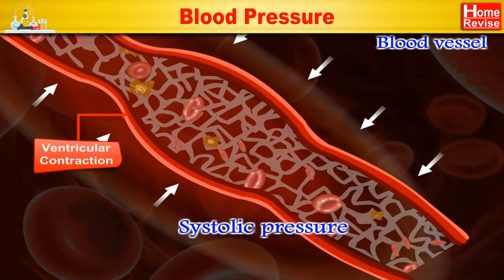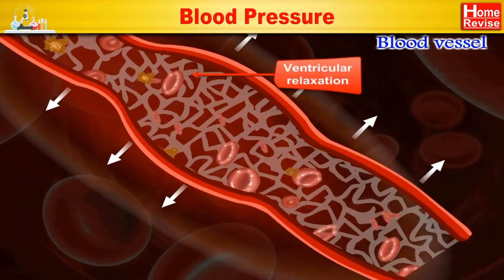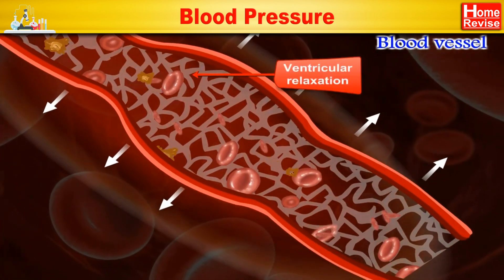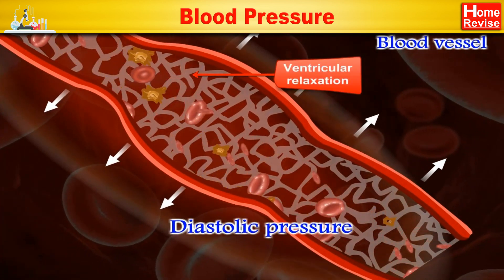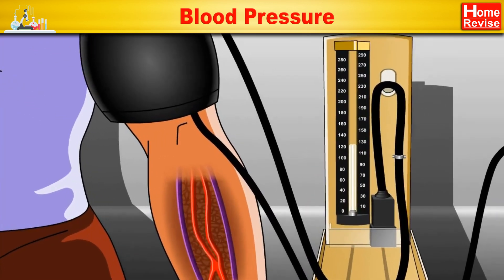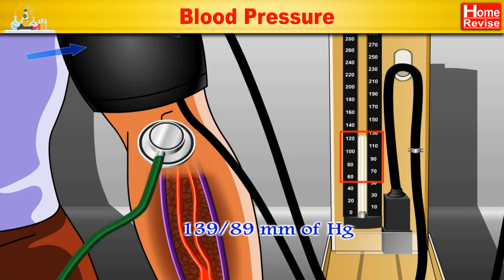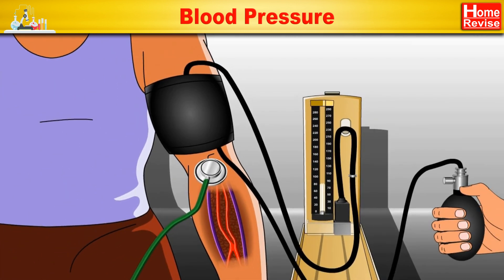Pressure recorded during the contraction of the heart is called systolic pressure, and that recorded during relaxation is called diastolic pressure. The blood pressure of a healthy person is about 120/80 to 139/89 millimeters of mercury. It is measured with the help of a sphygmomanometer.